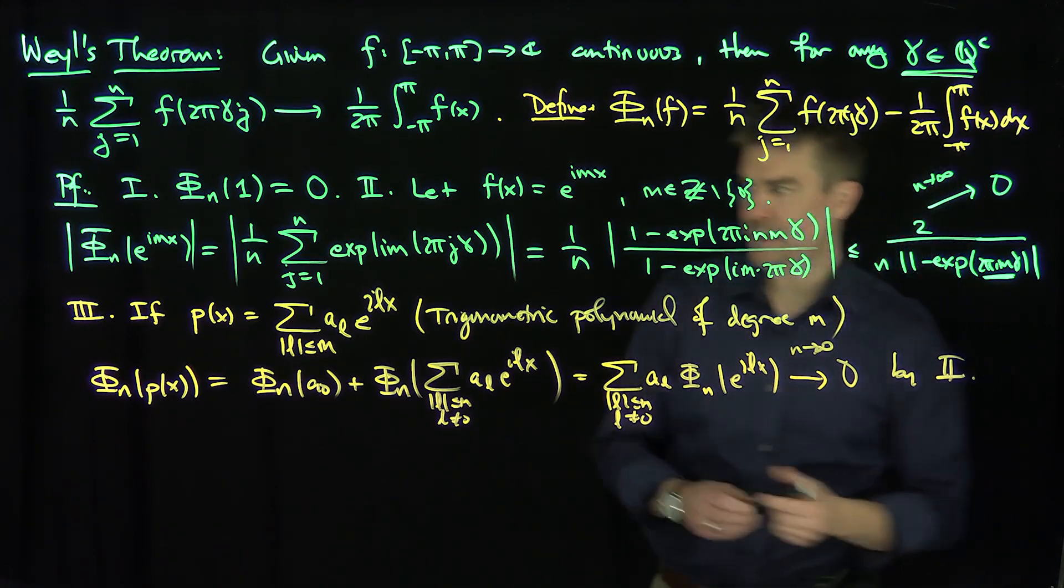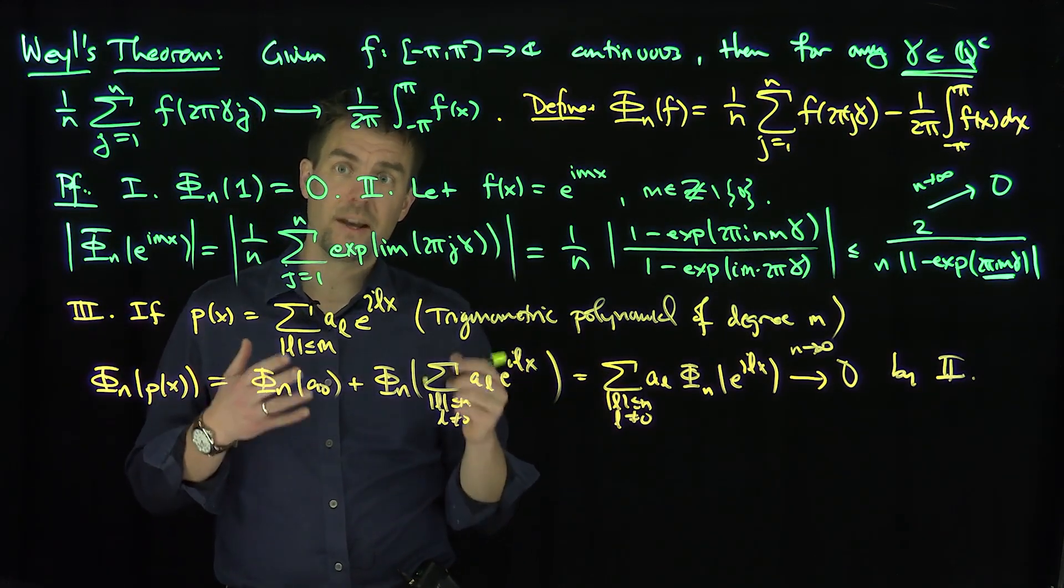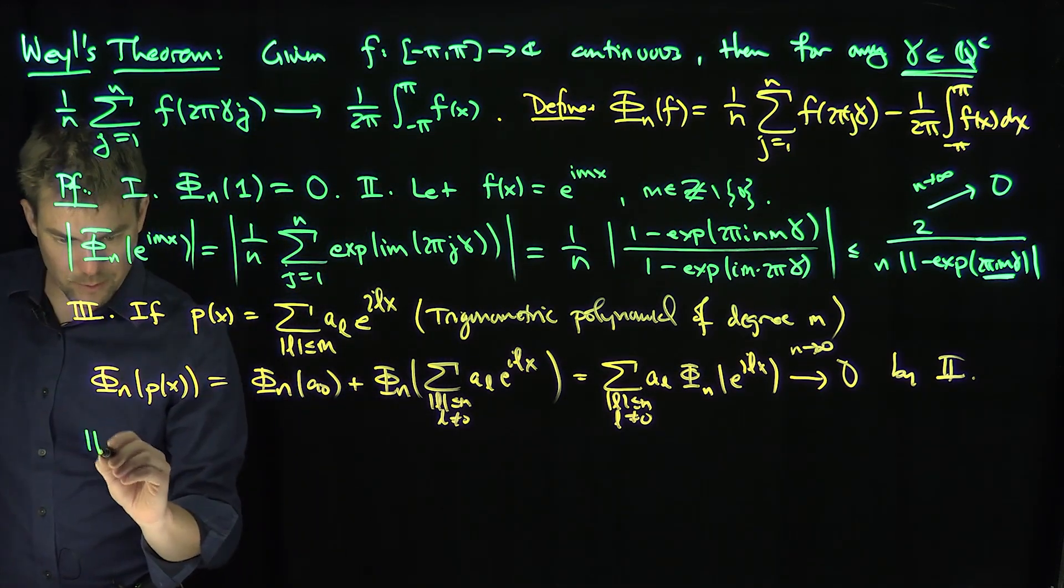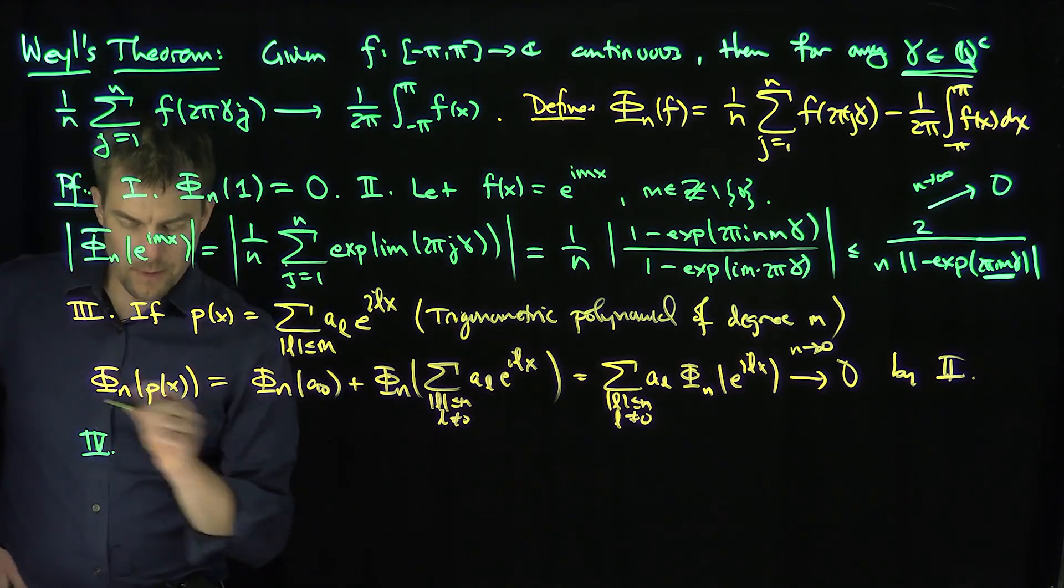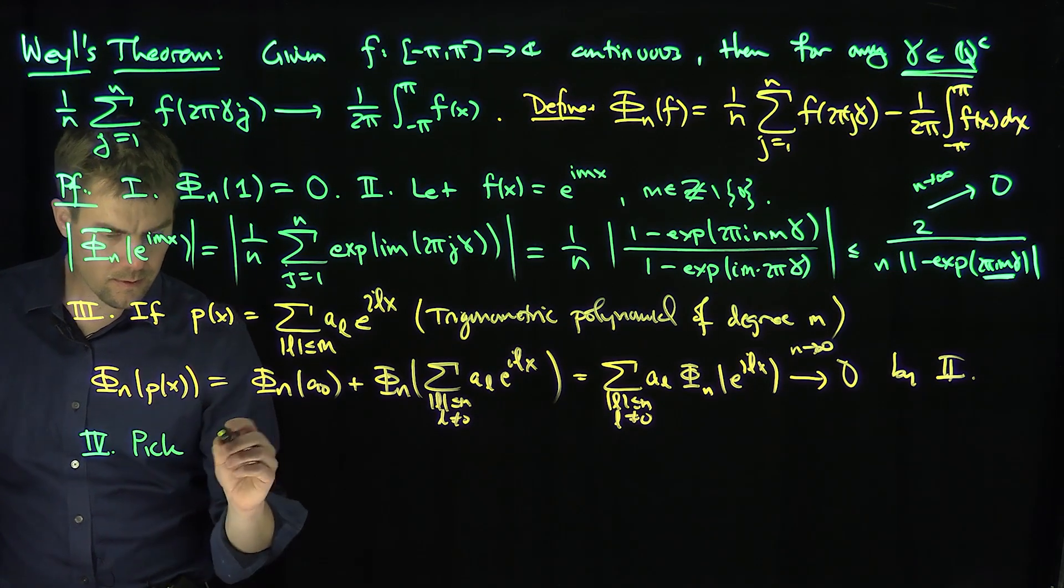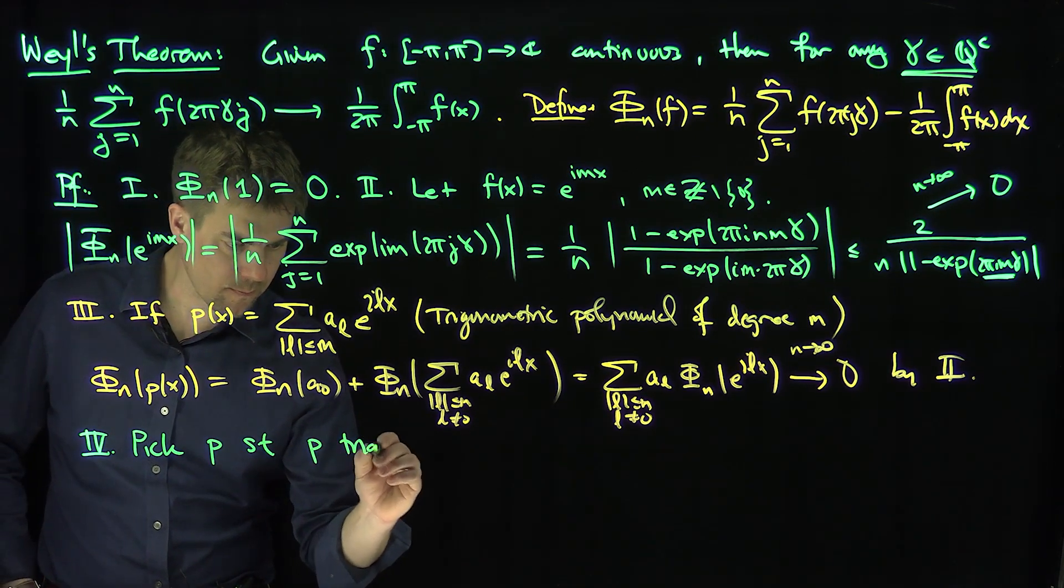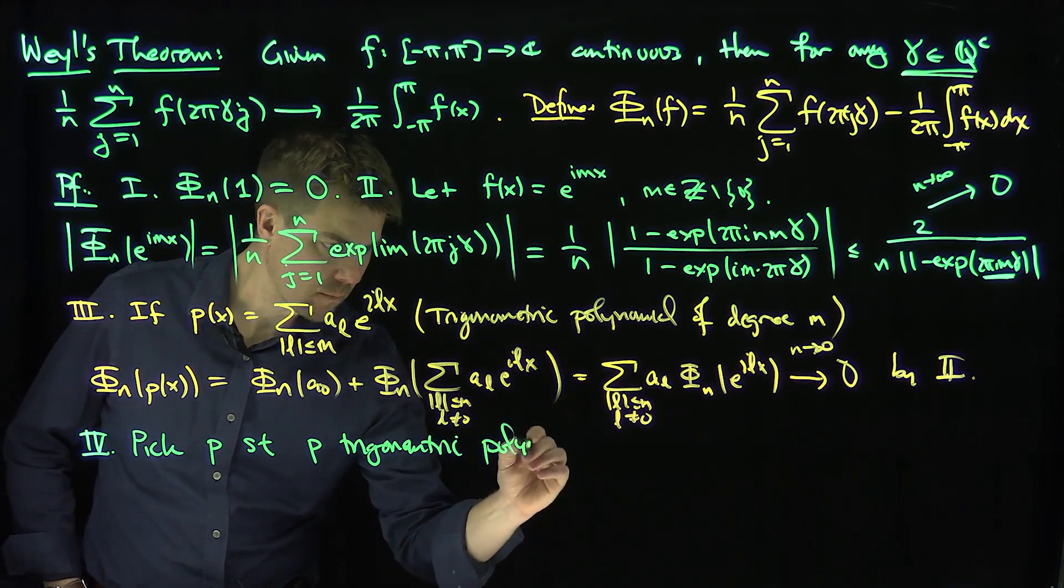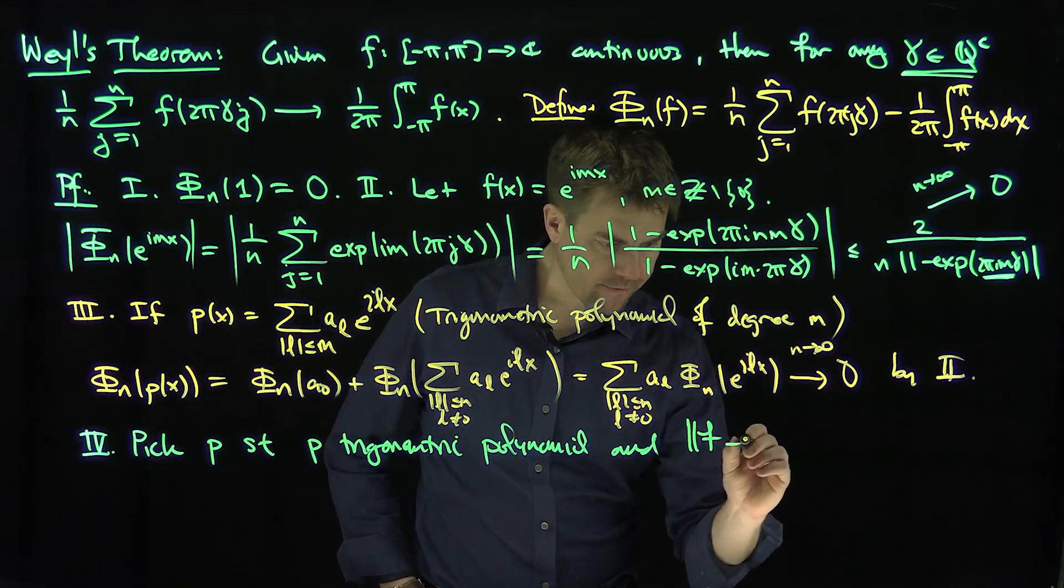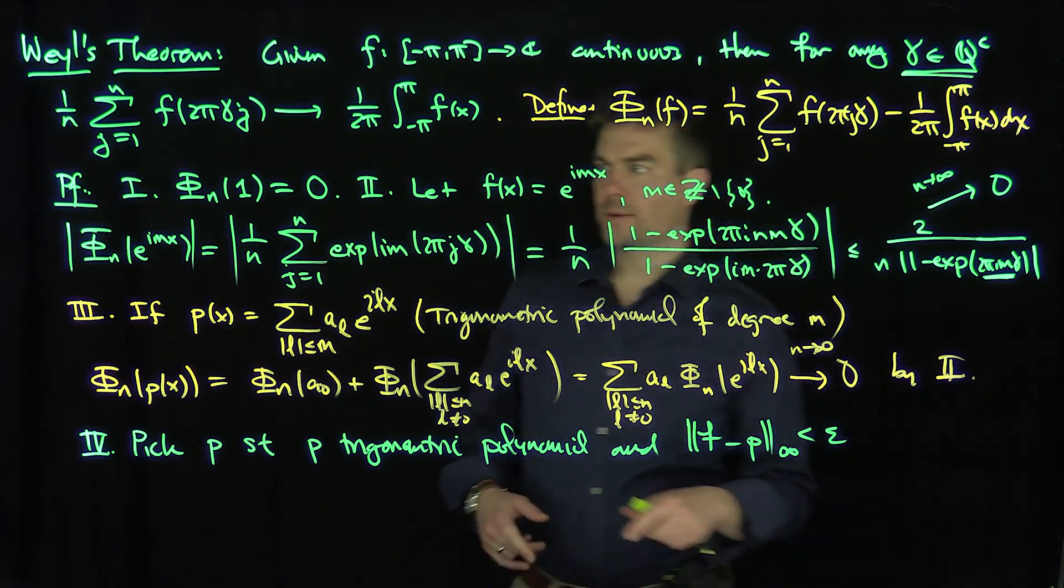Great. All right, and so now what's the next thing to observe? So now I know this is true for any, just in other words, φ_n, this statement over here is true for any trigonometric polynomial. Now we know that trigonometric polynomials are dense in the unit circle, dense in the set of continuous functions. So good. So now that's part 4 of this problem. So part 4 says what? So pick a polynomial p, such that p is a trigonometric polynomial, and f minus p in L∞ is less than ε.